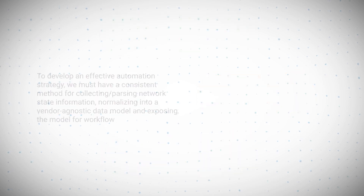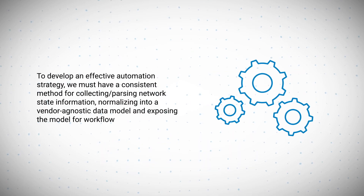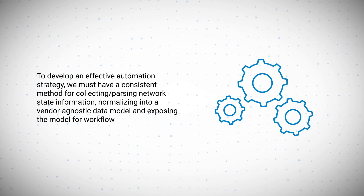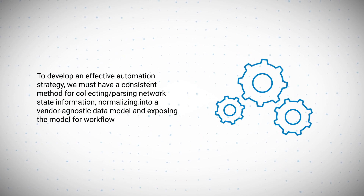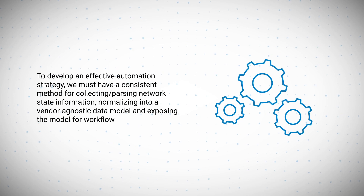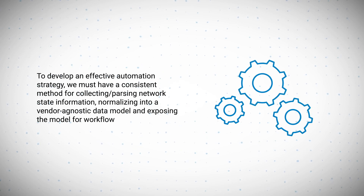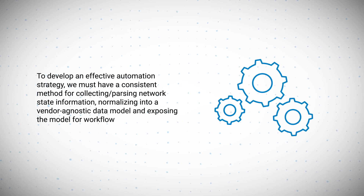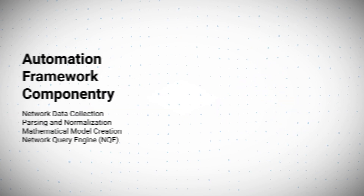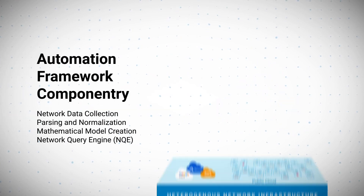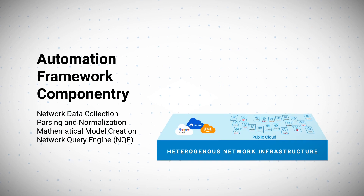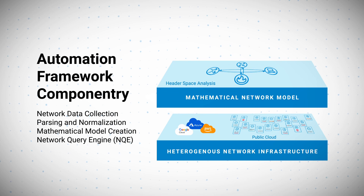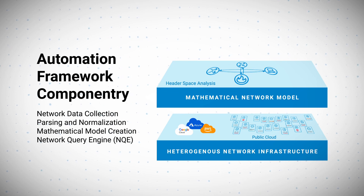To solve these issues, a new approach is needed. A scalable enterprise-wide automation strategy requires a consistent method for collecting and parsing network state information, normalizing that into a vendor-agnostic data model, and exposing the model for workflows. The Forward Networks solution provides a consistent framework to simplify the task of collecting, parsing, and normalizing your network state, creating a vendor-agnostic data model that spans the entire enterprise network.